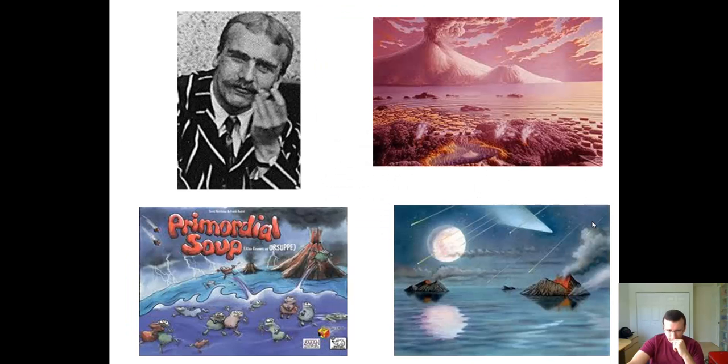So another concept proposed by a scientist called Haldane, J.B.S. Haldane, is the idea of a primordial soup, that the early Earth was an ocean world covered by a shallow ocean, which had dissolved many of the elements which were in its atmosphere. And these elements were methane, ammonia, carbon dioxide, nitrogen. And these elements form a primordial soup that is conducive to the formation of the chemistry necessary for the origin of life to occur.